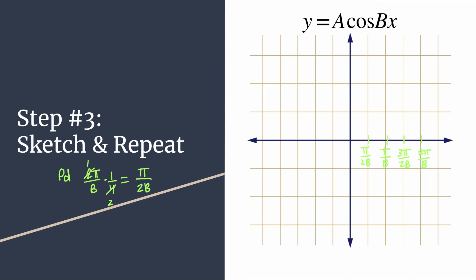Still thinking back to step one, we know our vertical tick marks can be labeled by just the absolute value of A. So let's just label the first positive one, A, the first negative one, negative A.